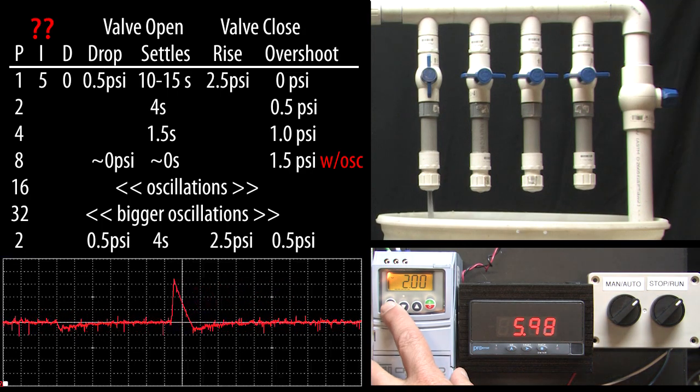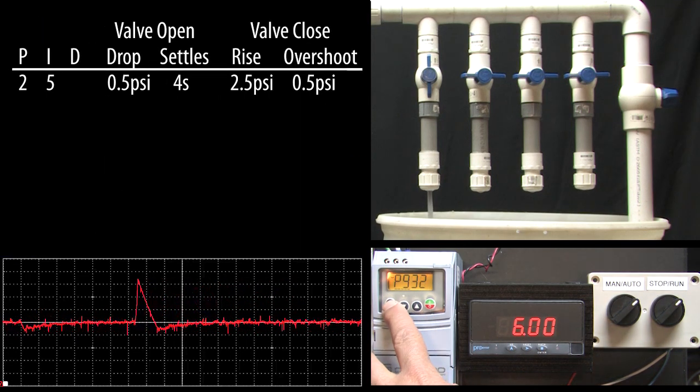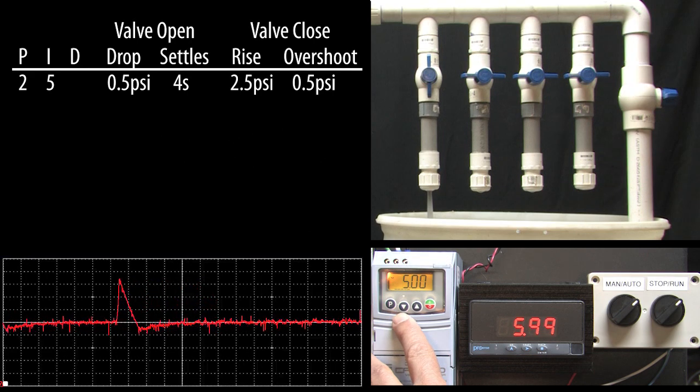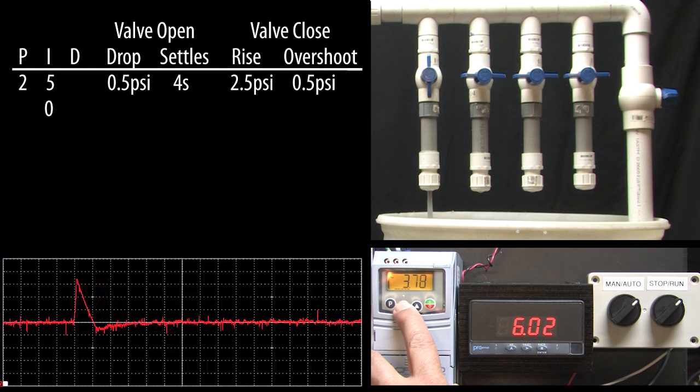How does the I term affect things? Let's go to parameter 932 and find out. The default I is 5. Let's turn it off by entering a zero. Uh oh, what happened? Our pressure dropped by over 3 psi.